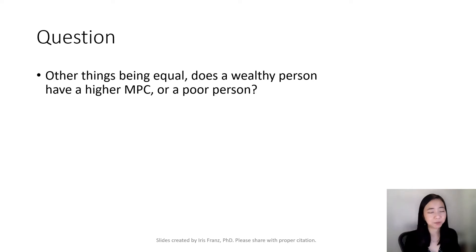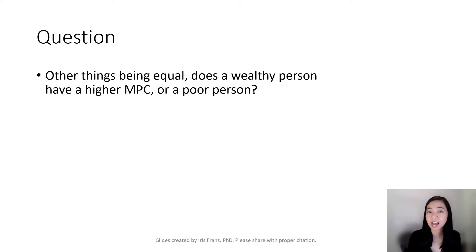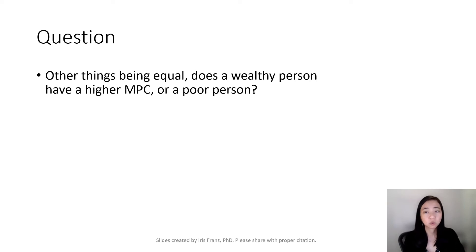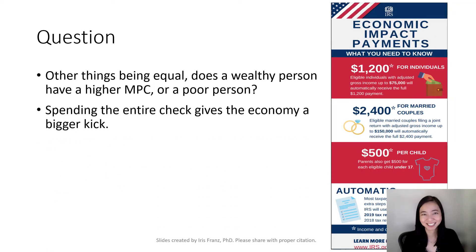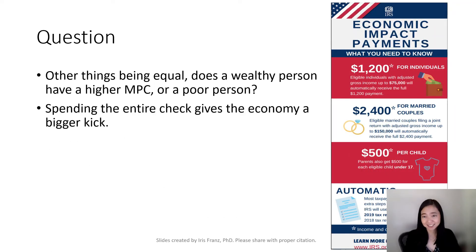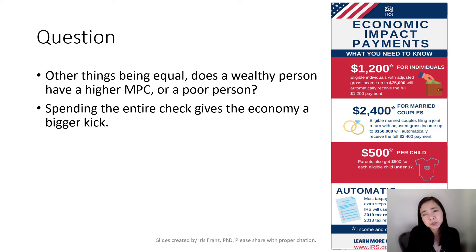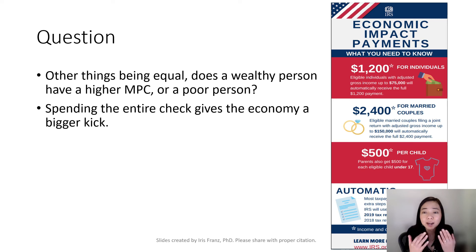Here is a question about MPC. All things being equal, does a wealthy person have a higher MPC or a poor person? Who will spend the entire stimulus check — the poor person or the rich person? Typically, a poor person will have a higher marginal propensity to consume because they are more desperate. They really need to buy food or new clothes for their growing children, so they are more likely to spend the entire stimulus check.